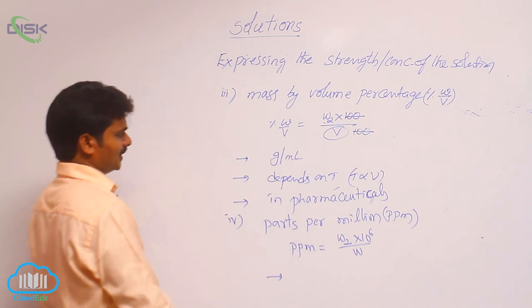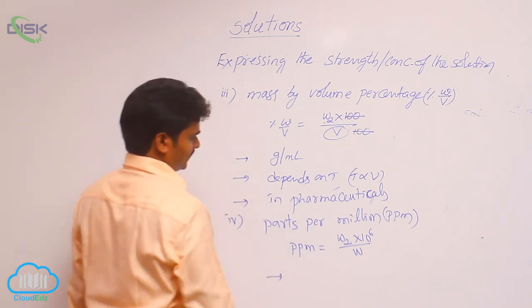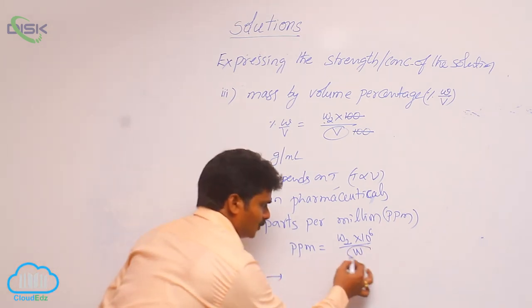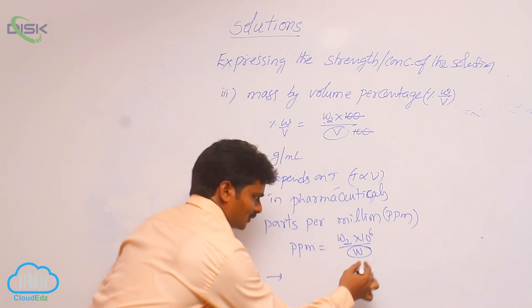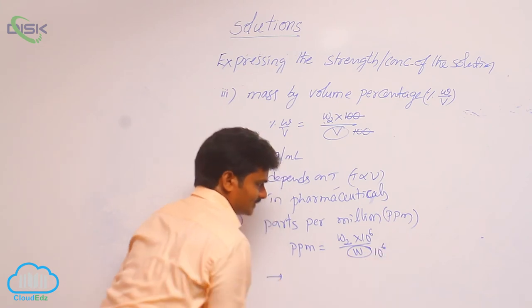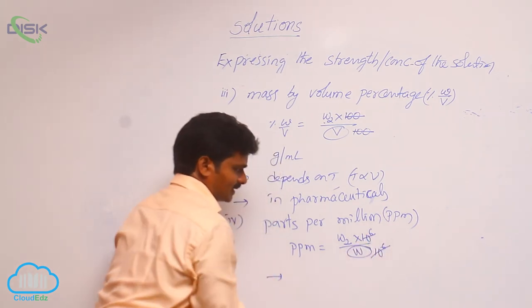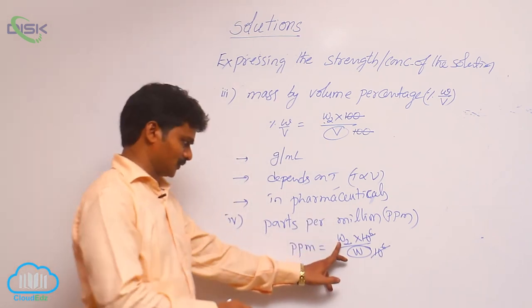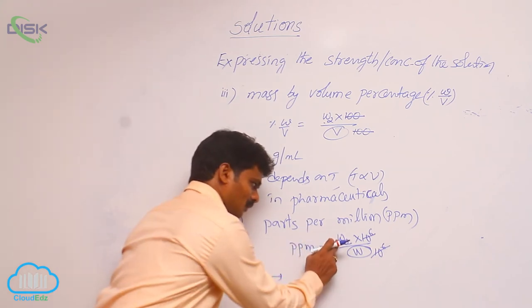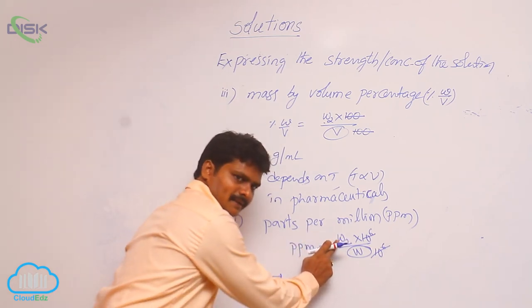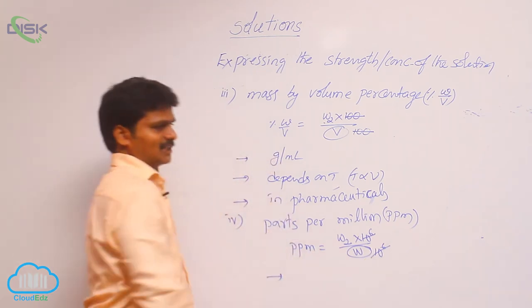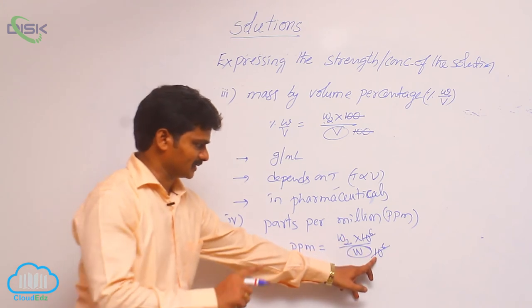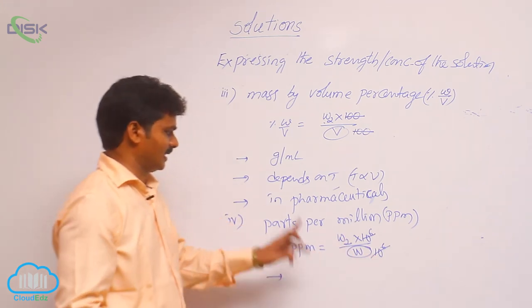What are its units? And how to define it? First, let us see the definition for it. How to define it? If W, that means weight of solution is taken as 10 power 6, then 10 power 6, 10 power 6 get cancelled. W2 will be left. W2 means weight of solute. So, weight of solute present in 10 power 6 grams of water is called parts per million. Weight of solute present in 10 power 6 grams of solution is called ppm.